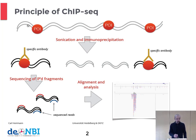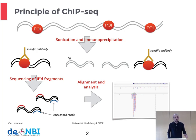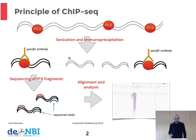Some of these fragments are bound by the protein of interest or show the histone modification, and some are unbound — these are the grey fragments displayed here. The core idea of ChIP-seq is to use an antibody that will specifically recognize the protein of interest or the histone modification, and through chromatin immunoprecipitation, the bound fragments can be isolated from the unbound fragments.